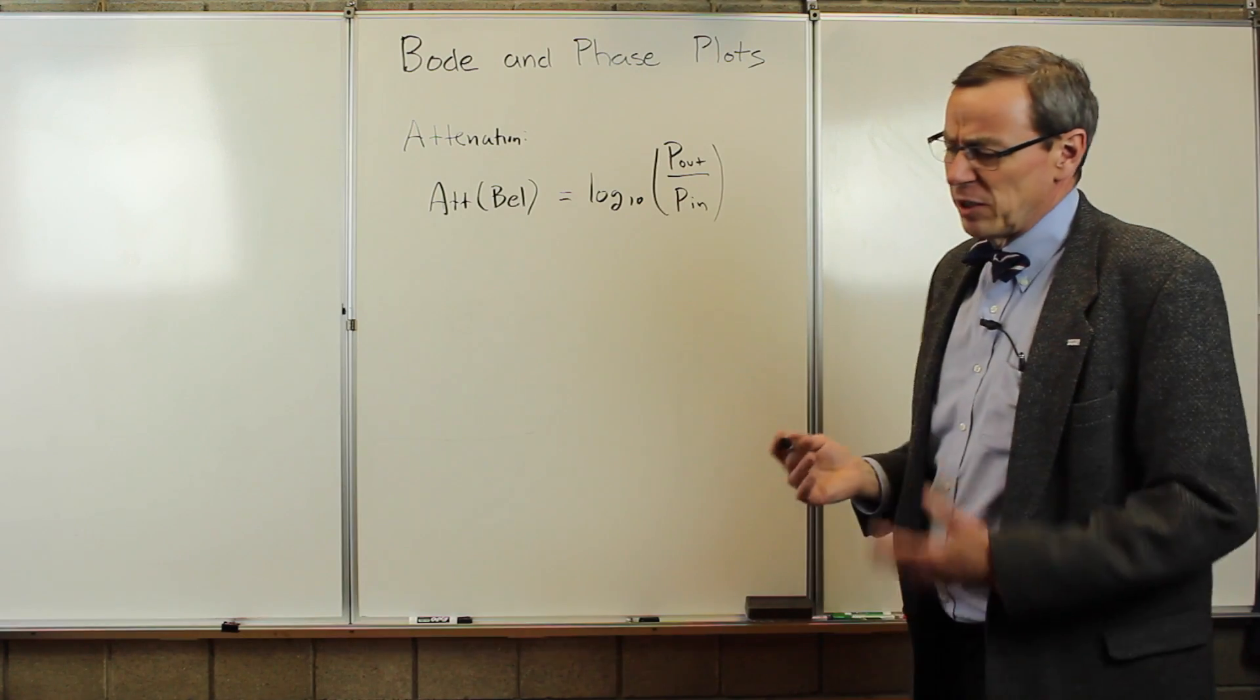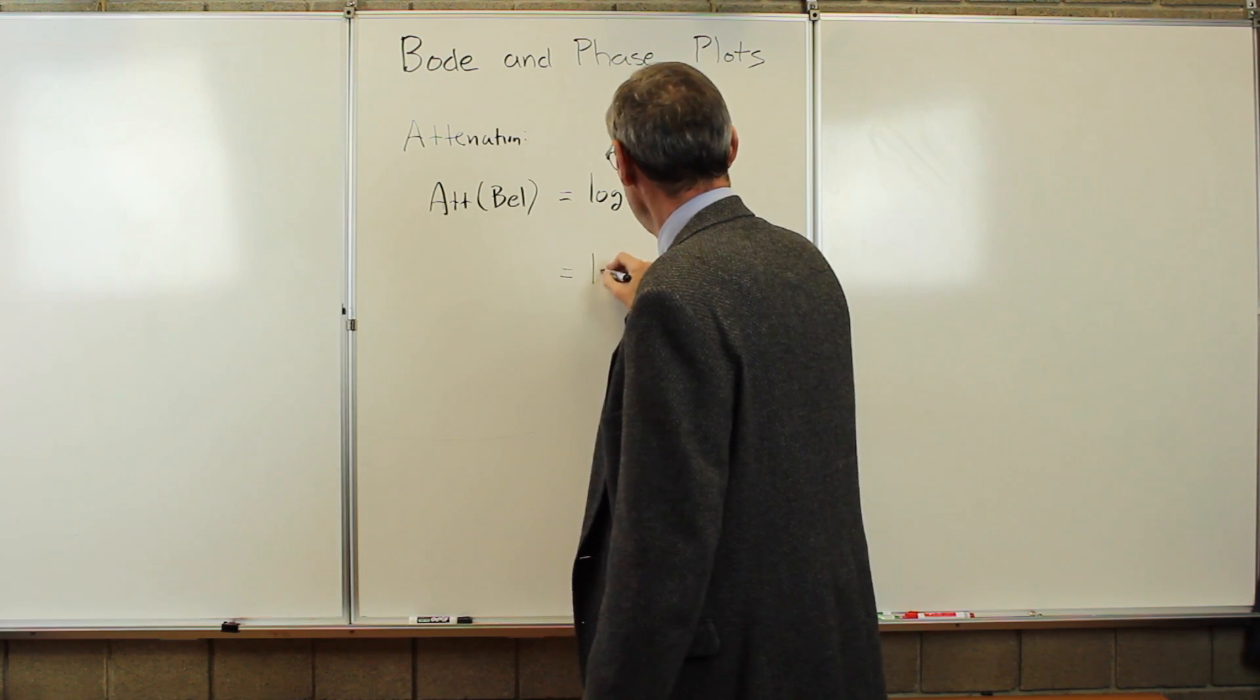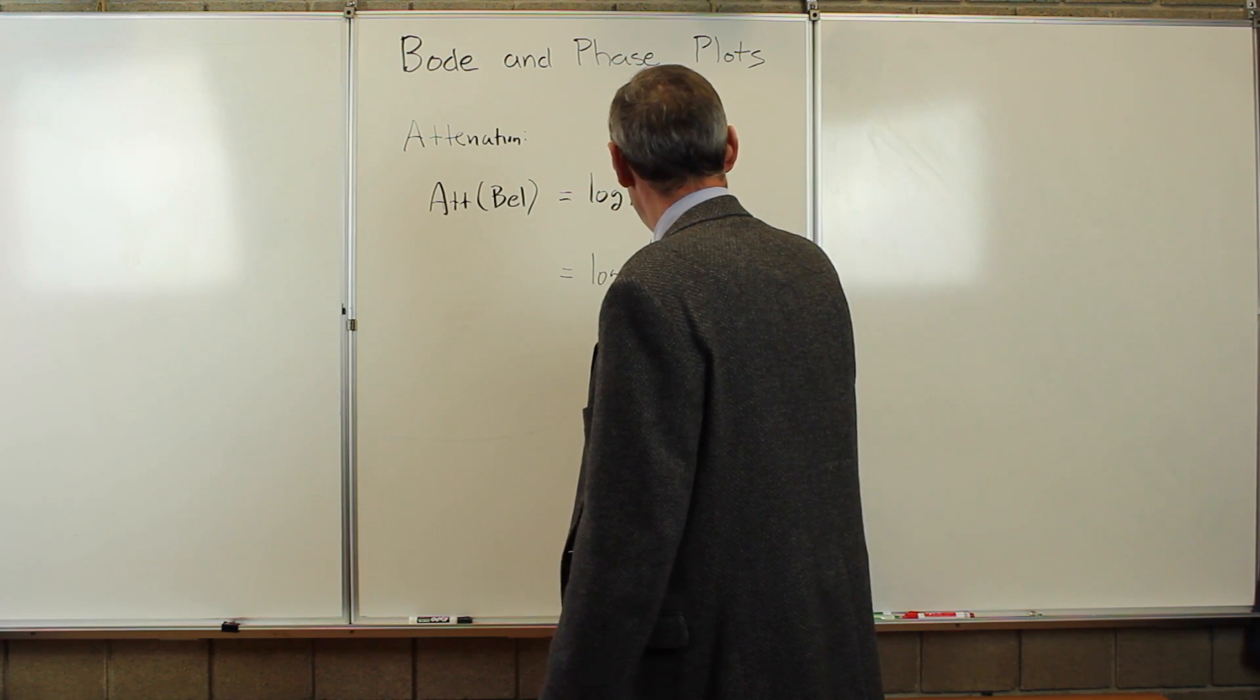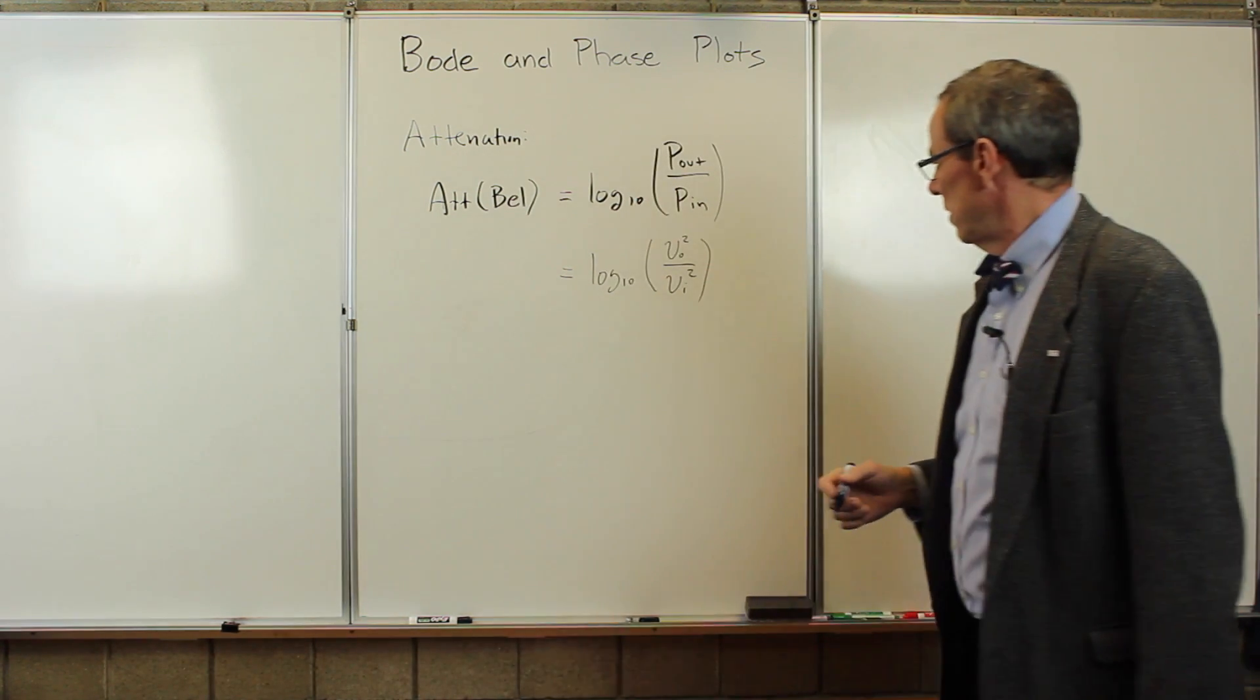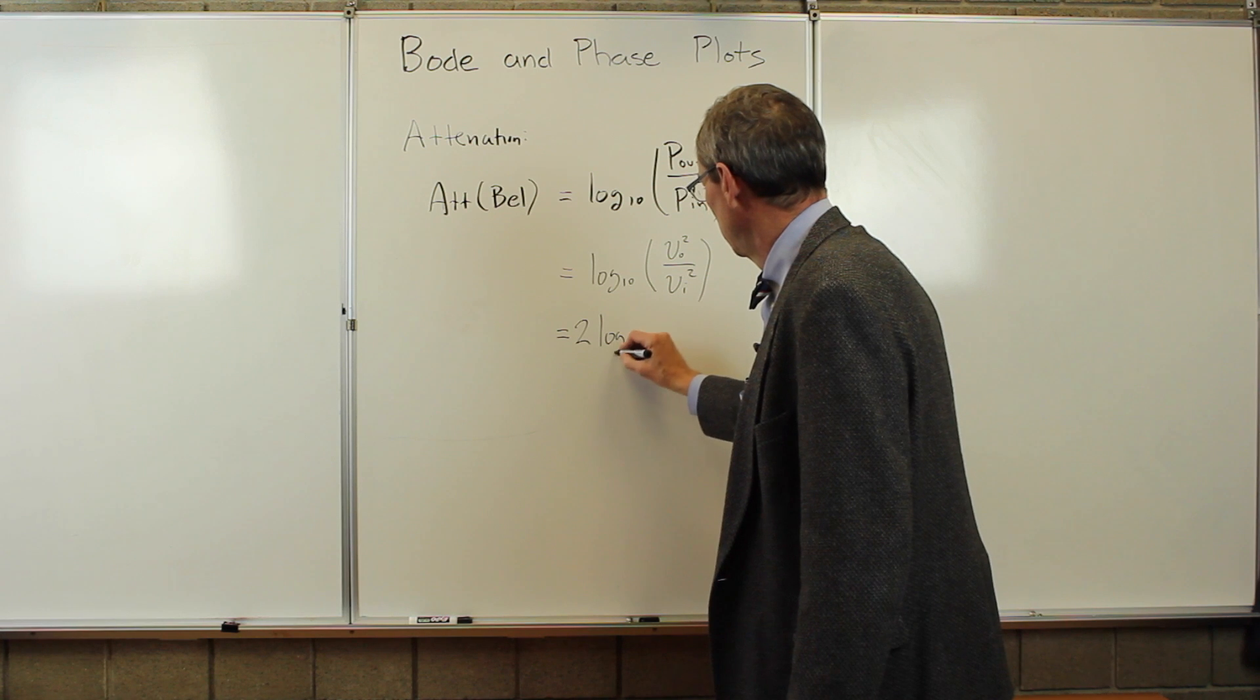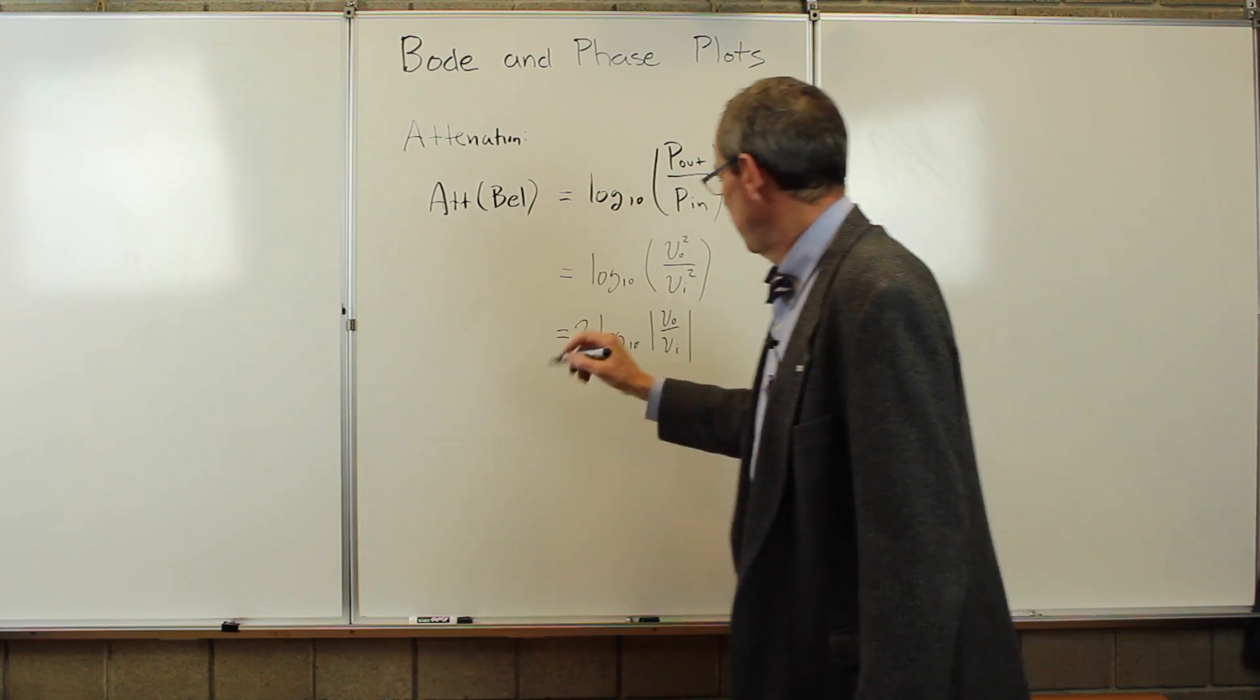In an electrical circuit, we know that the power is proportional to the voltage squared. So in our particular case, it's the same proportionality, log ten of v_out squared over v_in squared. And we can pull the two out of there. So this is twice log base ten. I'm going to put magnitudes here now, v_out over v_in. So that's the attenuation.